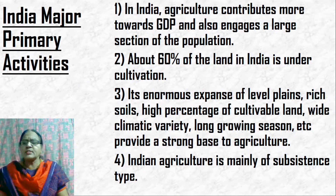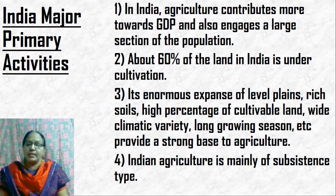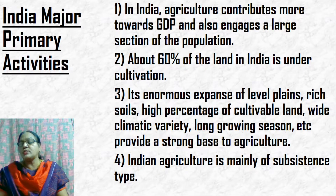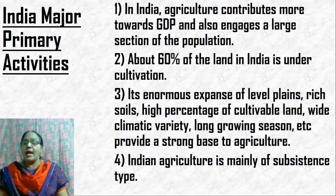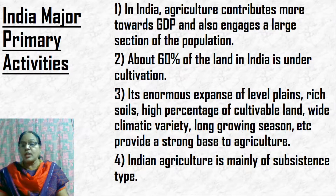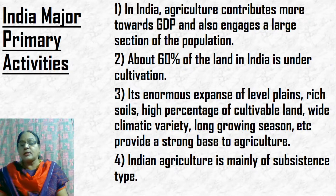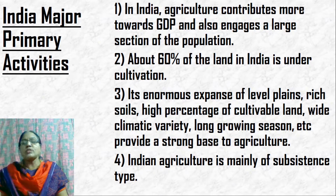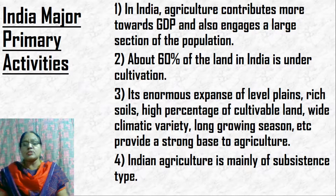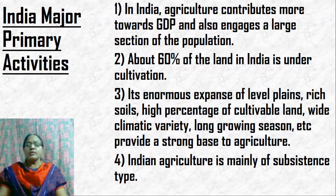The primary reason agriculture is a major activity in India is because of the flat level plains and fertile soil. We have a higher percentage of cultivable land, and compared to other countries, India's climate is varied — not too cold — so the growing period is long. All these provide a very strong base to agriculture.